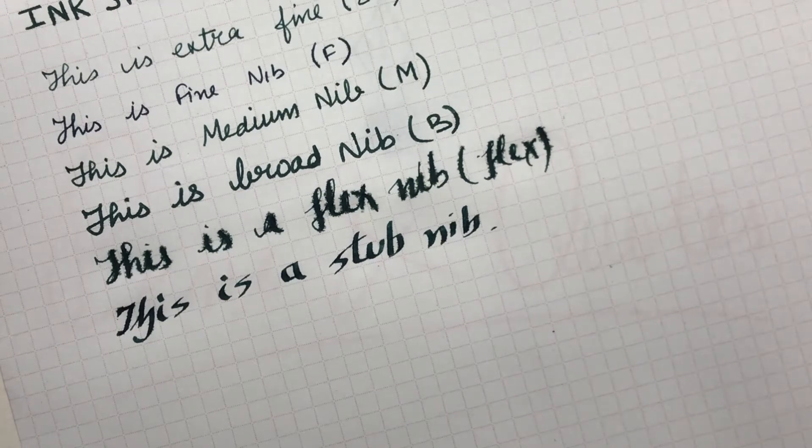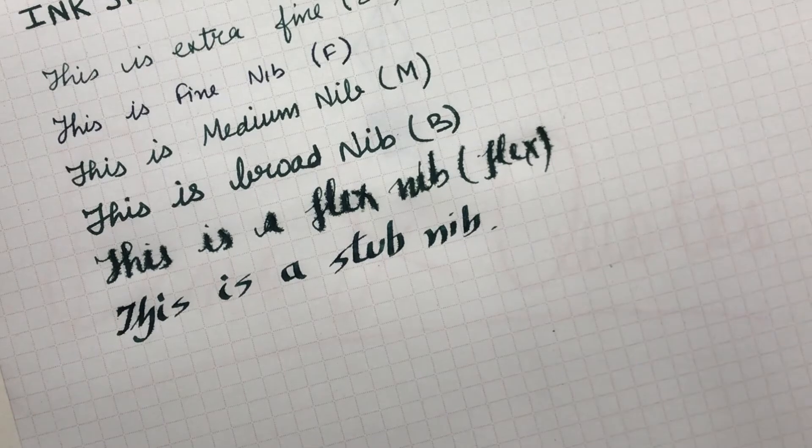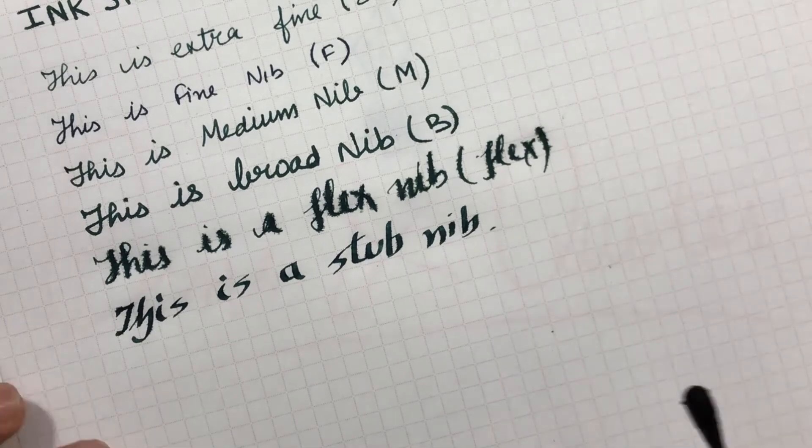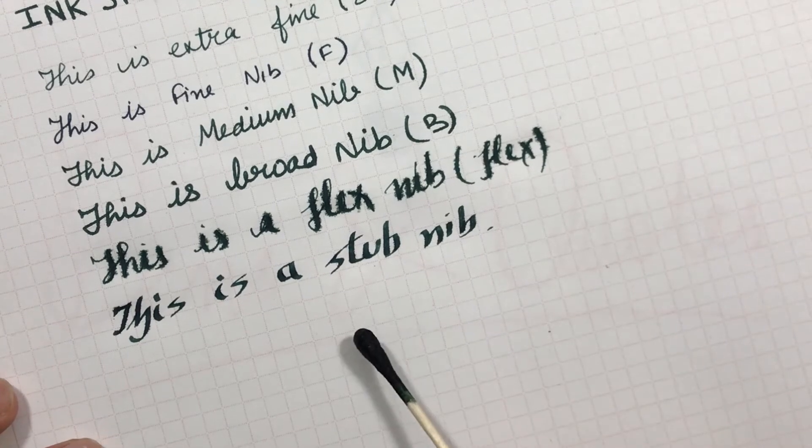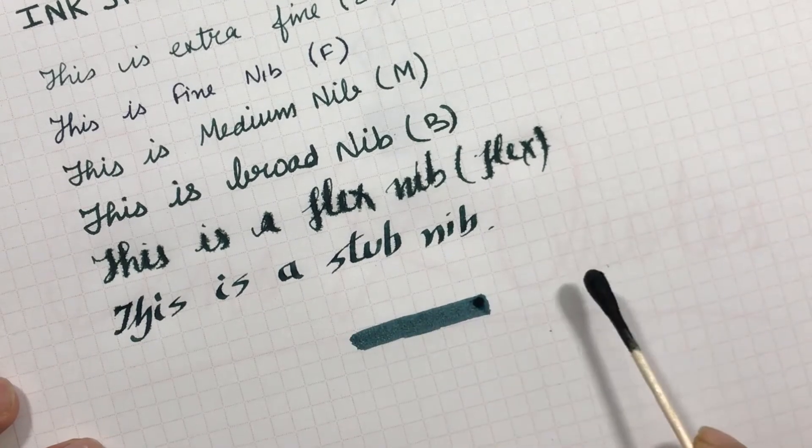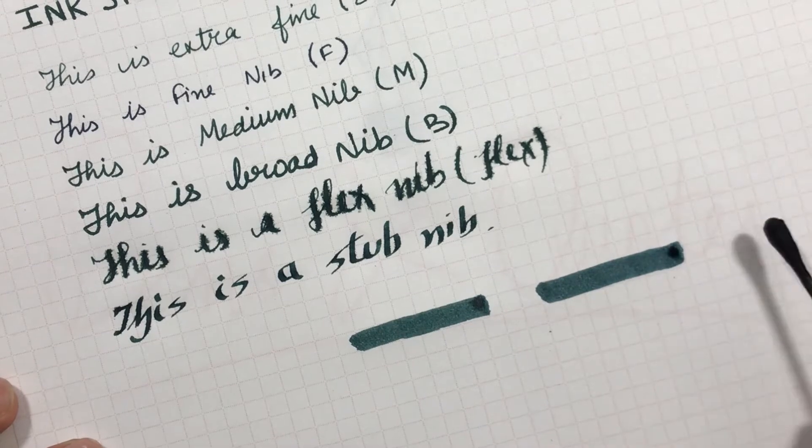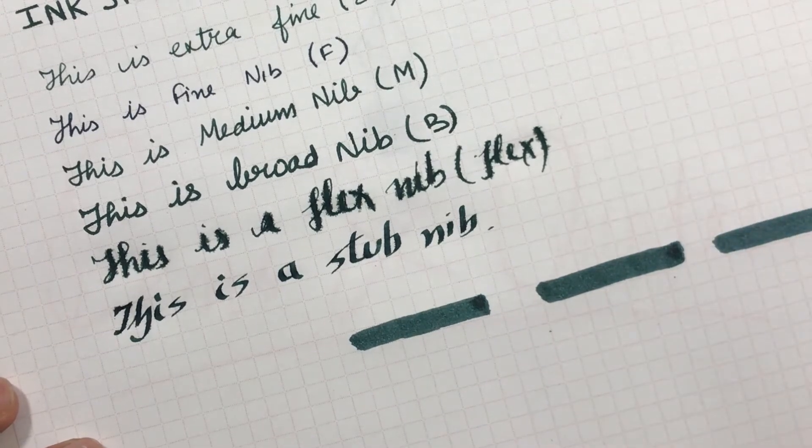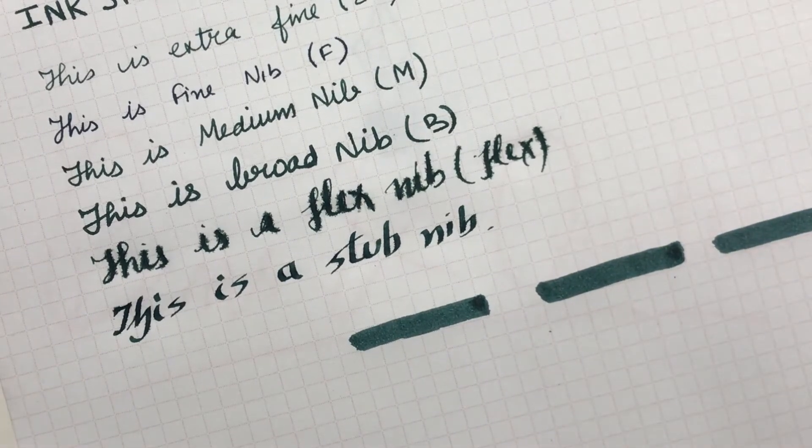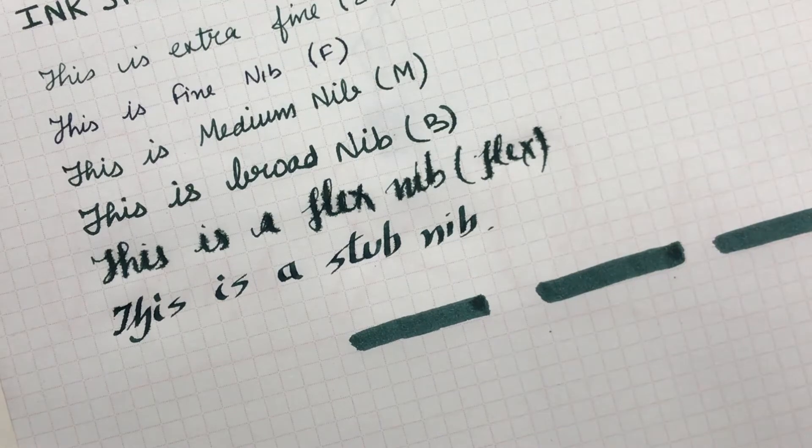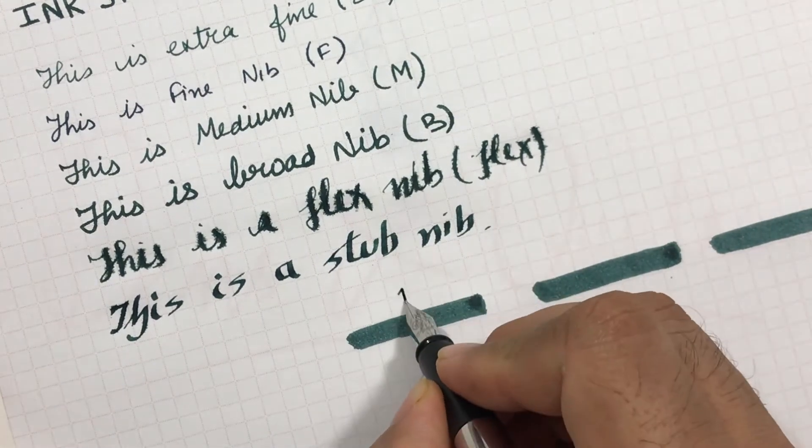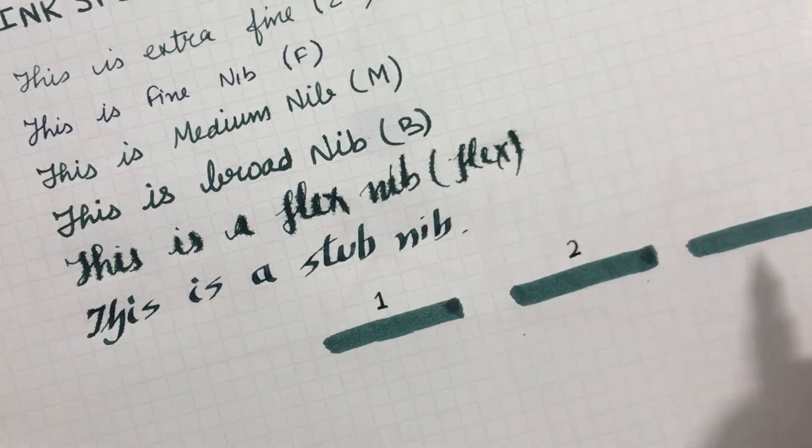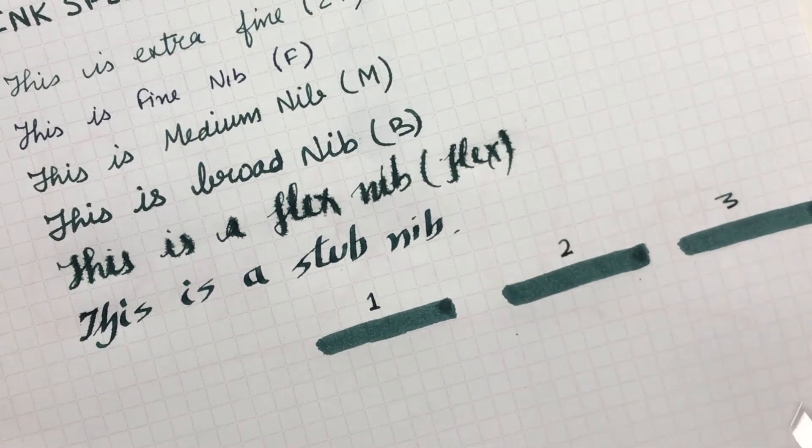So now let's have some multiple passes, let's check for them. So I have a swab here, right? So I'll have one pass, two passes, third pass. We'll wait for it and come back to it again. So let me mark it: one, two, and three.